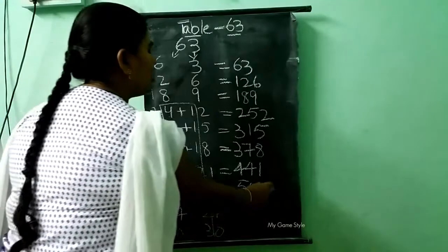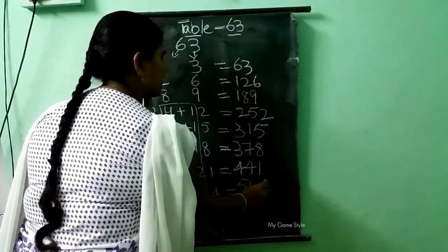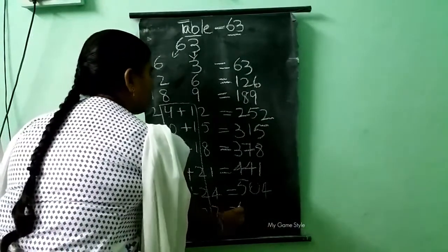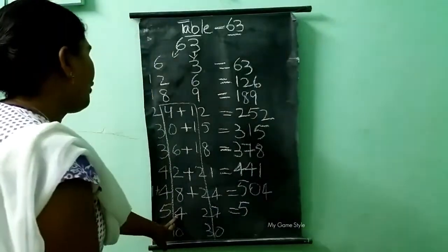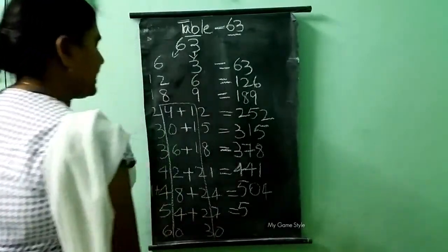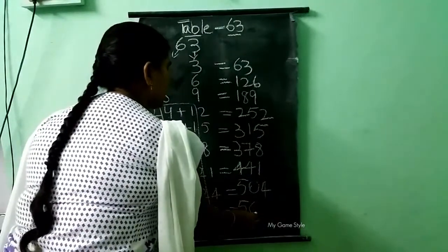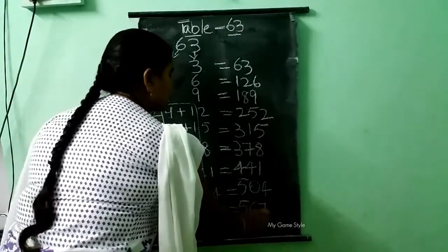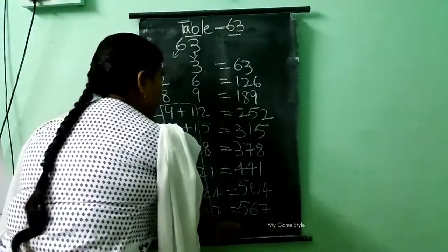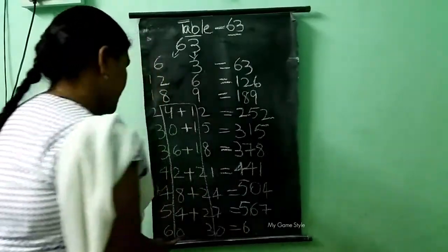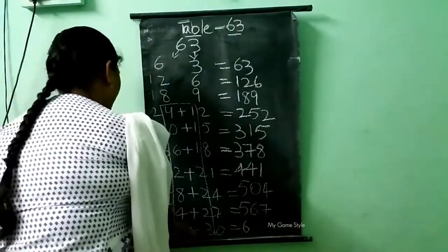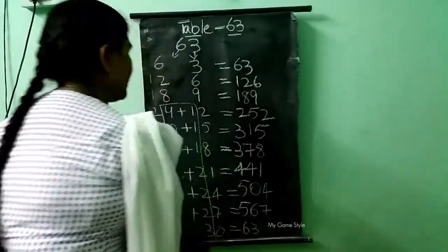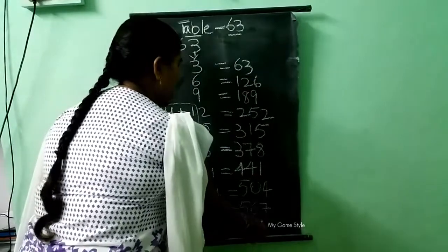Then here it is 4, so I am writing 4 as it is. Then here 5, so we write 5 as it is. Then 4 plus 2 — how much? 6. So I am writing 6 here. Next 7 — 7 as it is. Then here also it is 6, so we write 6. Then 0 plus 3 — how much, children? 3. Here 0 is there, so I am writing 0 as it is.